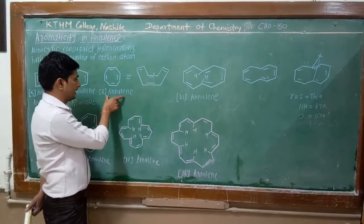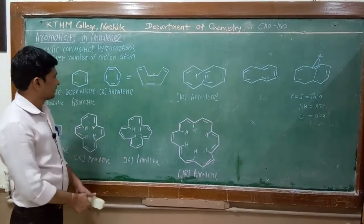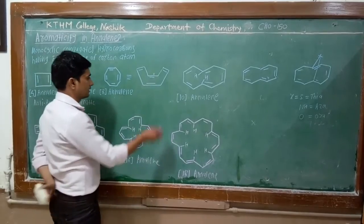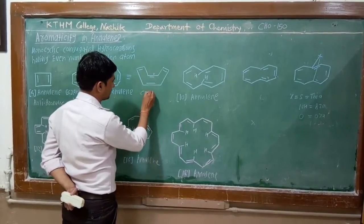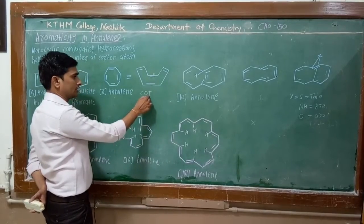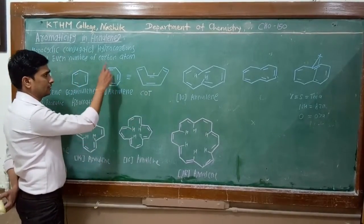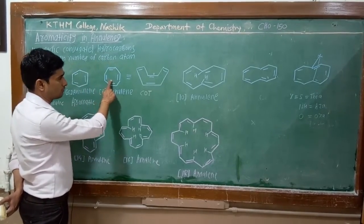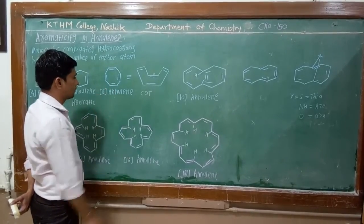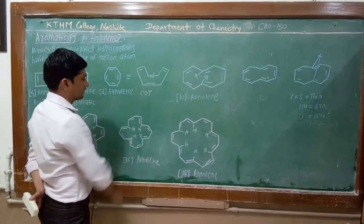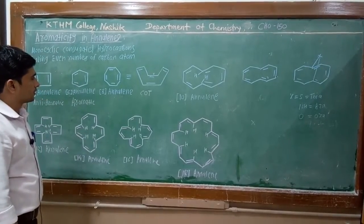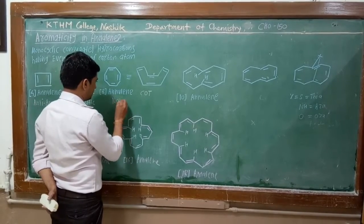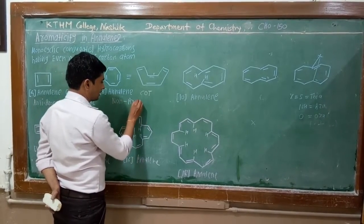8-annulin — the name of this compound is cyclooctatetraene, or COT in short. This is cyclic and fully conjugated, but this compound is not planar. It is like a tub shape due to angle strain. Therefore this compound is non-aromatic. Cyclooctatetraene or 8-annulin is non-aromatic.